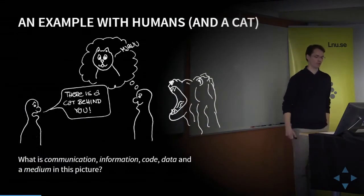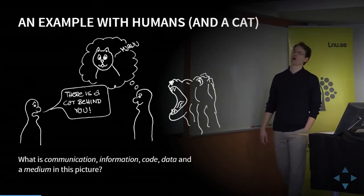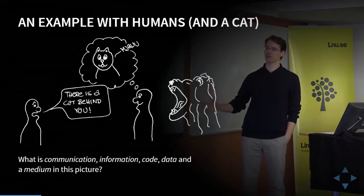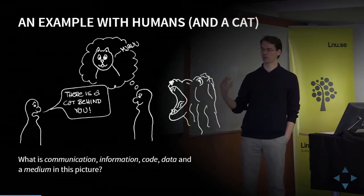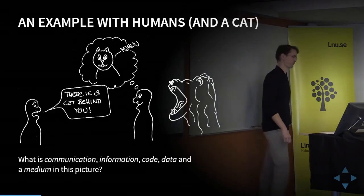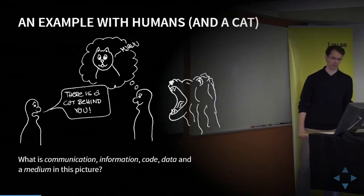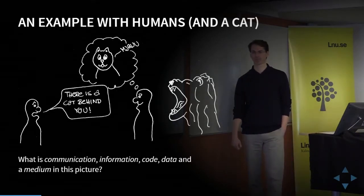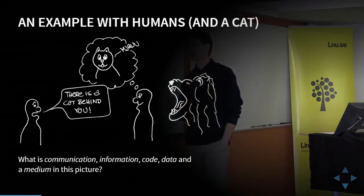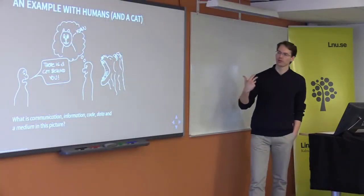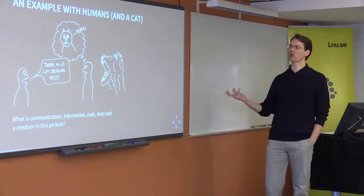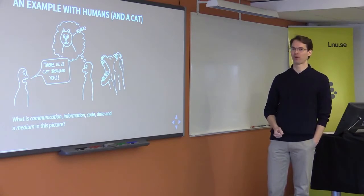To see if you understood this, here is a picture. I want you to look at it and figure out what is communication, what is the information, what is the code, what is the data, and what is the medium. Communication is probably the thing that the person on the left is trying to convey to the person on the right — that there is some large cat behind him. That is the communication, the sharing of information.